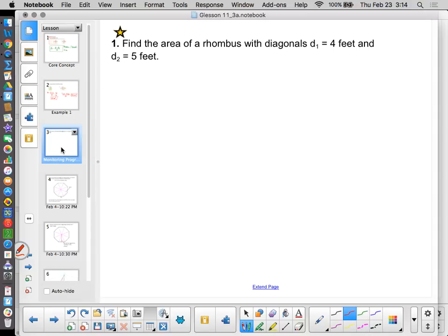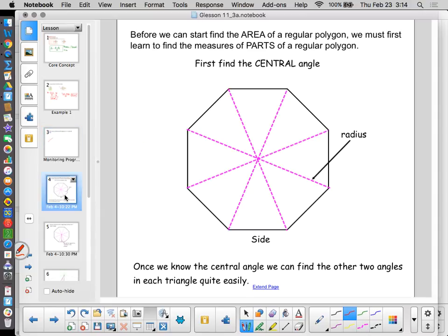So now you use it. Go ahead and find the area of this rhombus with these two full-length diagonals. Well, you knew it wasn't going to be all that easy, so now we have to dive into regular polygons and finding the area of a regular polygon. But before we can do that, we have to start by dissecting a regular polygon and learning the names of parts.